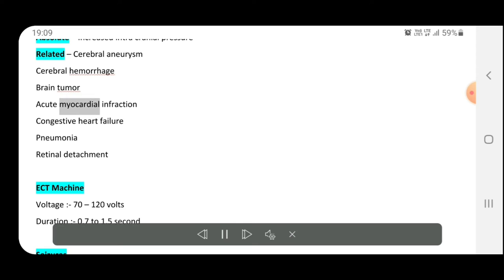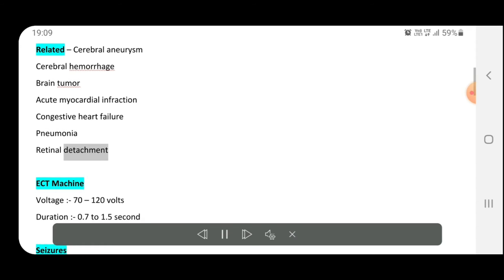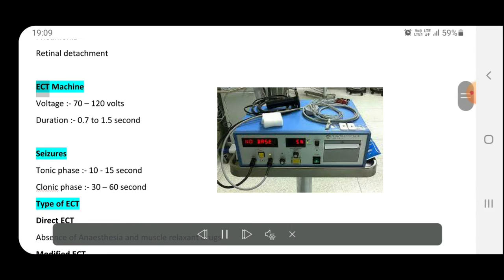acute myocardial infarction, congestive heart failure, pneumonia, retinal detachment. ECT machine: voltage 70 to 120 volts, duration 0.7 to 1.5 seconds.